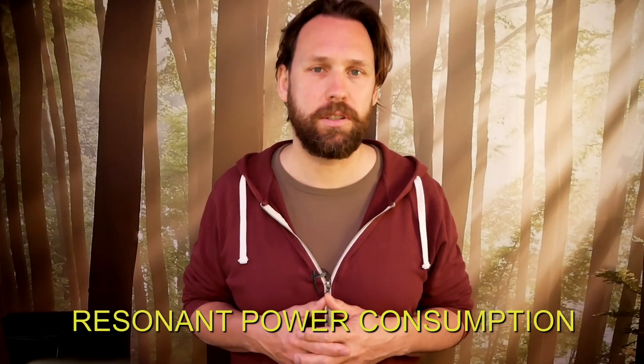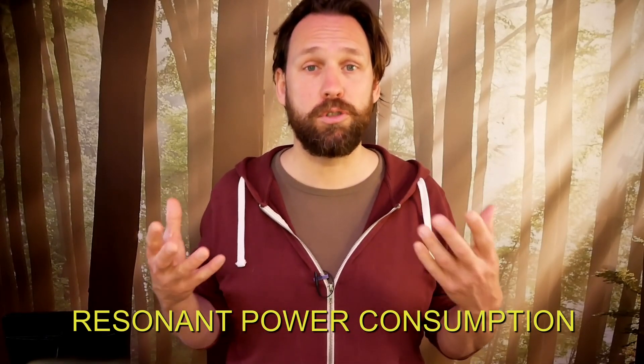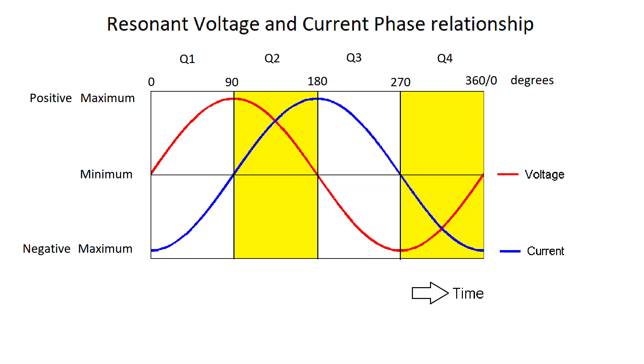Let's go back to the resonant sine wave graph and see where this condition of power consumption happens. As you can see in Q2 and Q4 the current and the voltage are present and they are of equal polarity. Both are positive in Q2 and both are negative in Q4. This means the resonant coil is consuming power in Q2 and Q4.